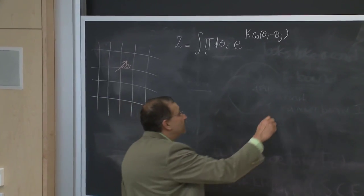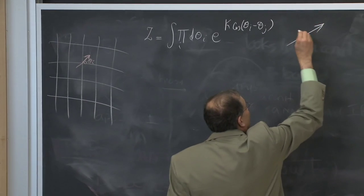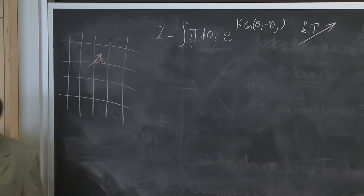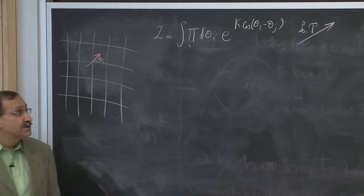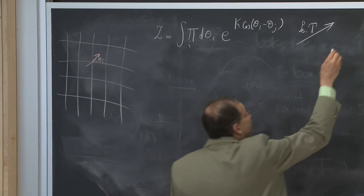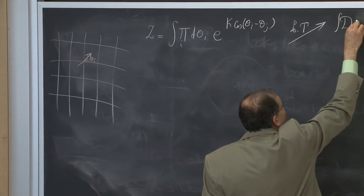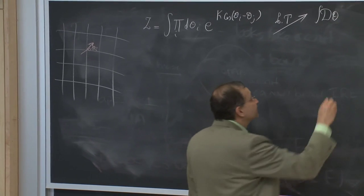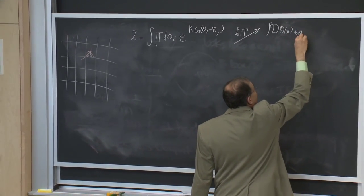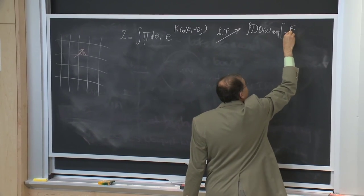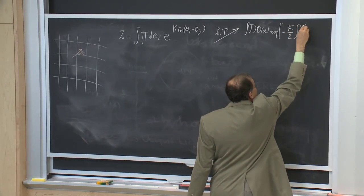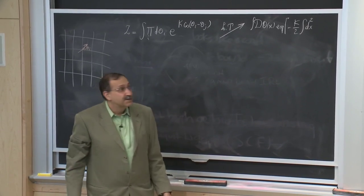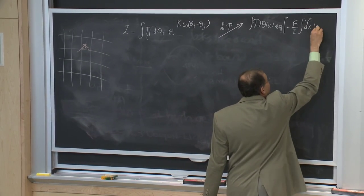If we go to low temperatures where k is large, this is roughly an integral over all configurations of the continuous field theta of x, with a weight that is — with the appropriate choice of lattice spacing — k times the integral of the gradient of theta squared.